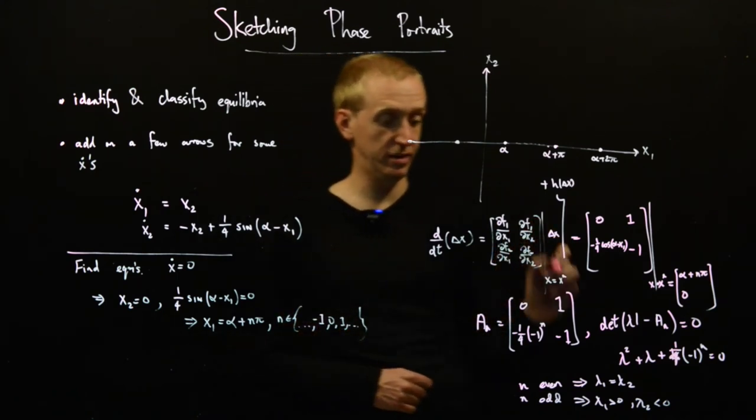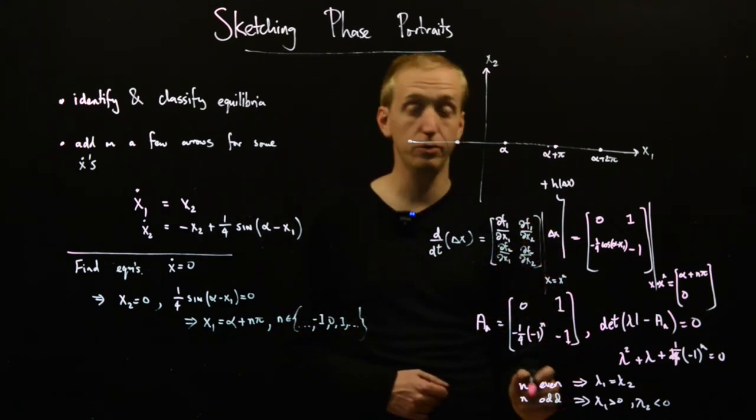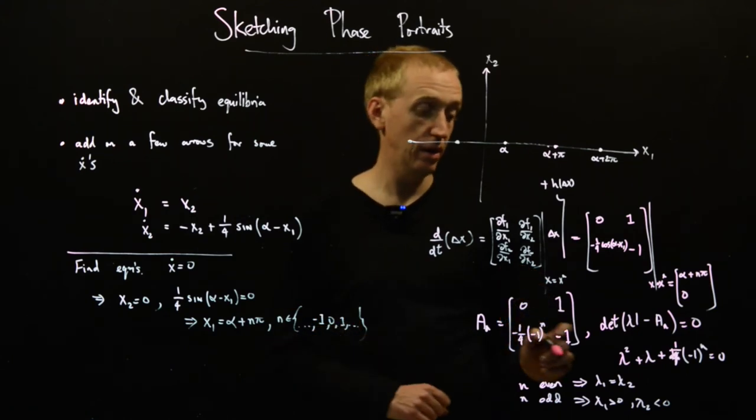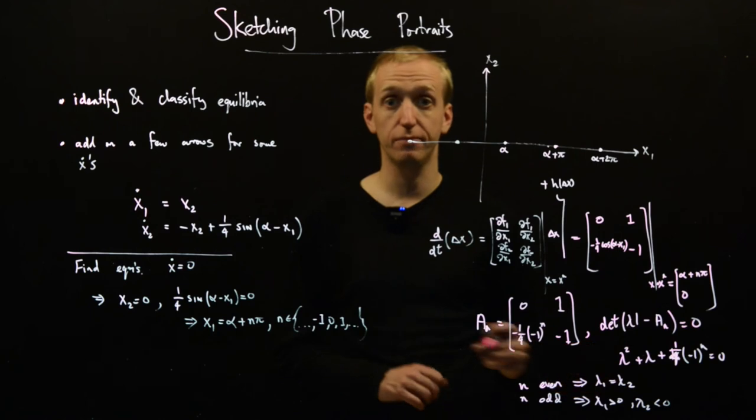Fine. So what does that mean? It means that for odd values, our equilibrium point is a saddle. And for even values, it's stable.